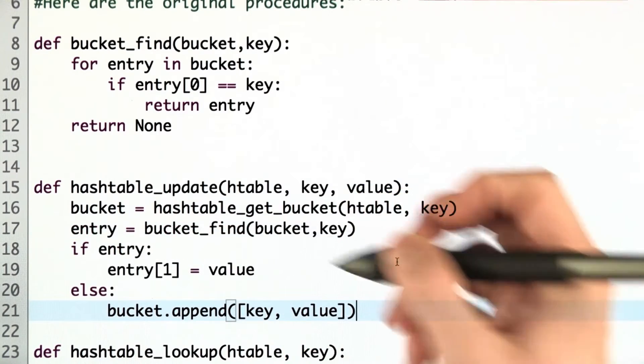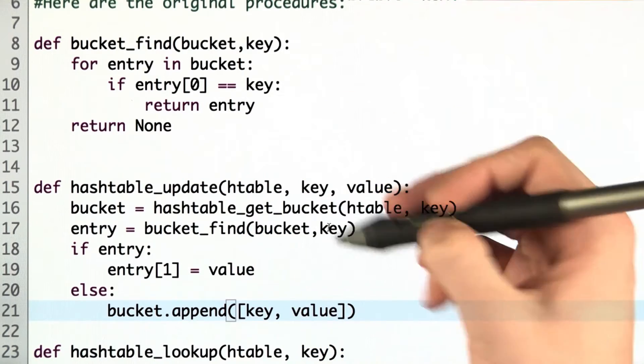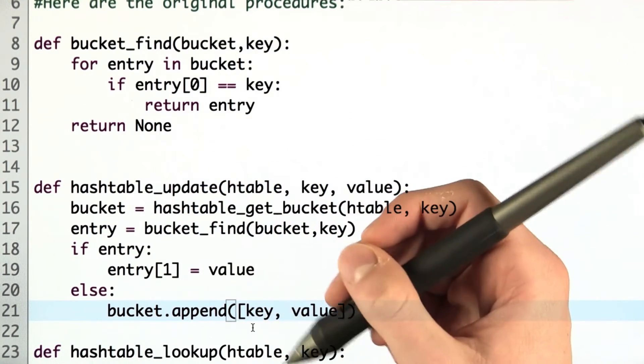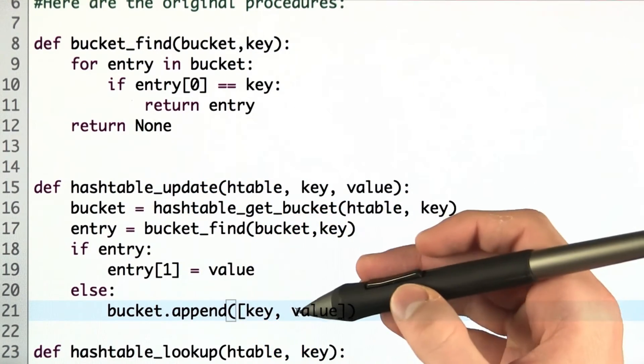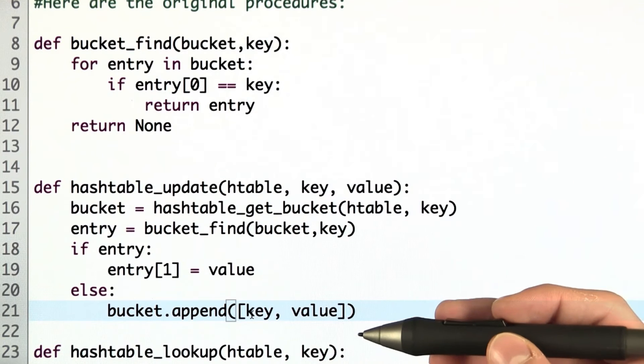I've changed Hashtable update. We find the bucket in the first line. Then within the bucket, we're searching for the key. And if we find that entry, we're going to update the value. Otherwise, we're going to append the key and the value to the end of the bucket. It looks quite a bit simpler than the original function.